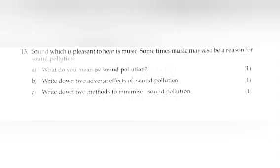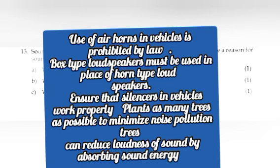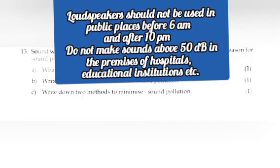C. Write down two methods to minimize sound pollution. Answer: Use of air horns in vehicles is prohibited by law. Box type speakers must be used in place of horn type loudspeakers. Ensure that silencer in vehicles works properly. Plant as many trees as possible to minimize noise pollution, as trees can reduce loudness of sound by absorbing sound energy. Or write any two relevant points.